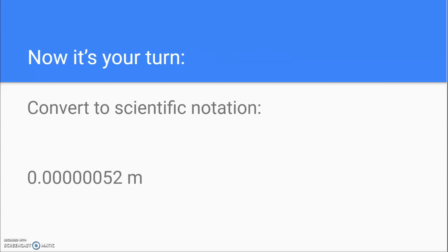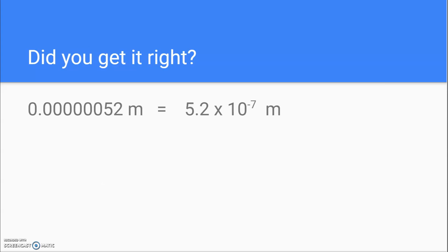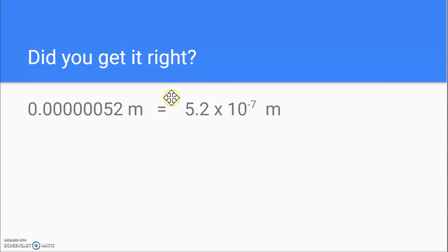Now it's your turn — try to convert the number listed below to scientific notation. Pause the video and see if you get it right. Did you get it right? This number becomes 5.2 — we move the decimal between the 5 and the 2, and count the number of places: 1, 2, 3, 4, 5, 6, 7. We had to move it 7 places, but we had to move it to the right, so it's 10 to the negative 7th. And this is a very small number.